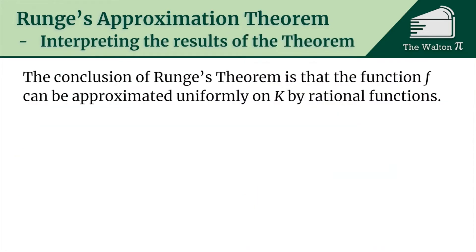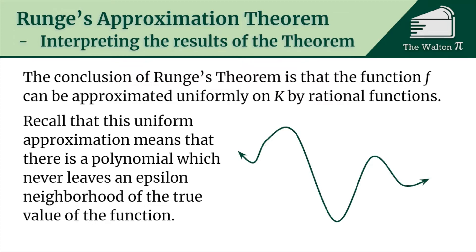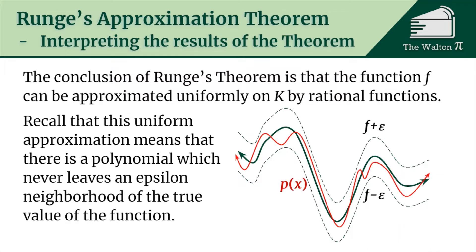The main conclusion of Runge's theorem is that f can be approximated uniformly on K by rational functions. Uniform convergence means that if f(z) is approximated by rational functions p_n(z), then for any epsilon greater than zero there is some N greater than zero such that for all n greater than N, the absolute value of f(z) minus p_n(z) is less than epsilon for all z in K. As a real analog: given an epsilon neighborhood around our function, there will always be a polynomial fitting within that neighborhood, and decreasing epsilon just requires choosing a different polynomial.